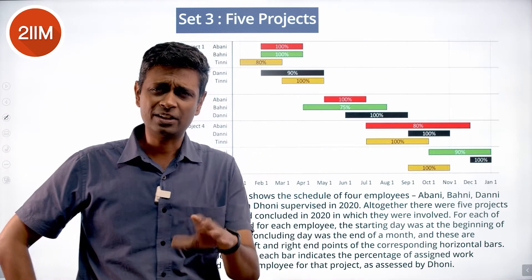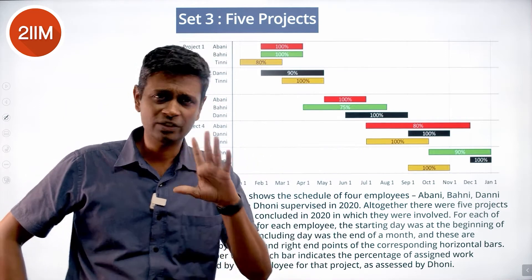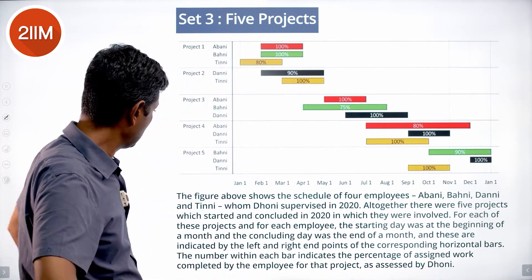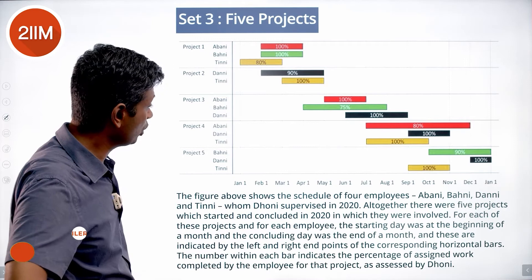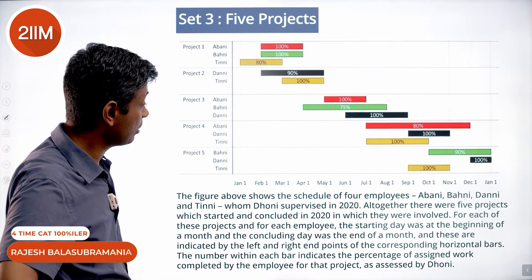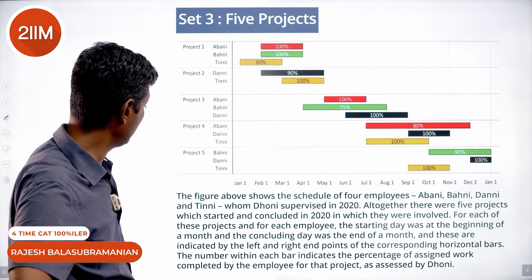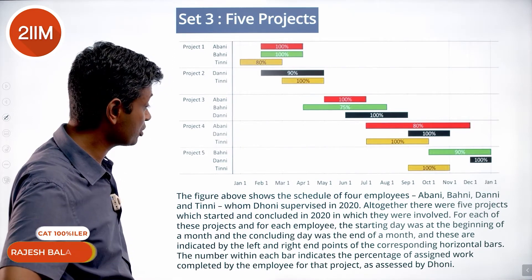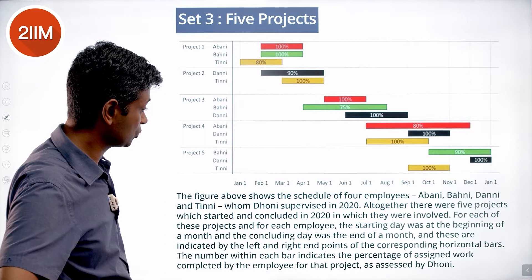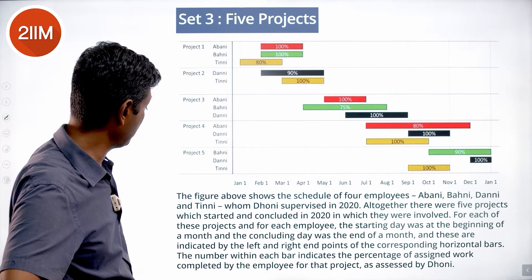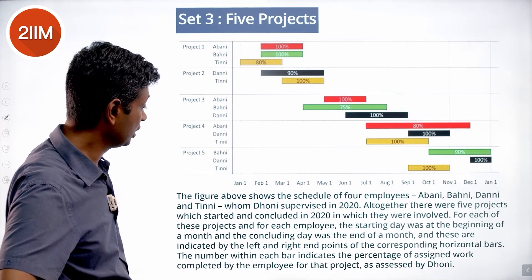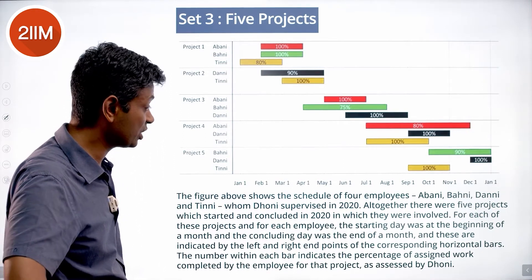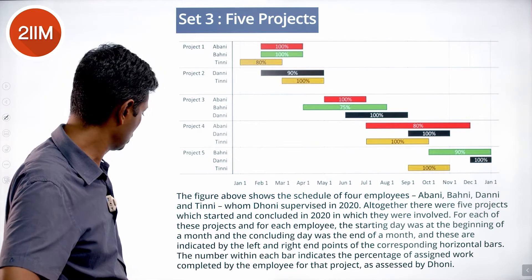Let's attack this set — this is a far simpler set, lovely set. The figure above shows the schedule of four employees: Abani, Bhani, Dhani, and Tinni, whom Dhoni supervised in 2020. Altogether there were five projects which started and concluded in 2020, in which they were involved.